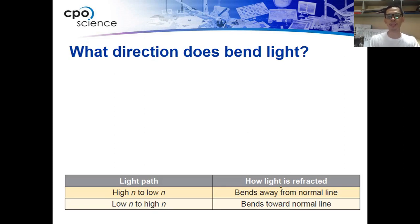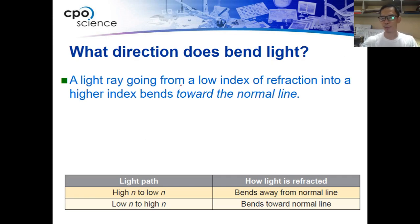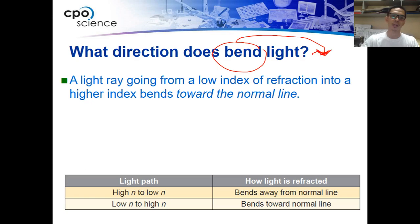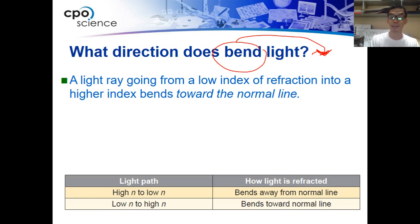In what direction does the light bend? A light ray going from a low index of refraction into a higher index of refraction tends to bend towards the normal line. So if the light ray goes from low index of refraction into a higher index of refraction — like what happens between air and diamond — the line bends towards the normal line.